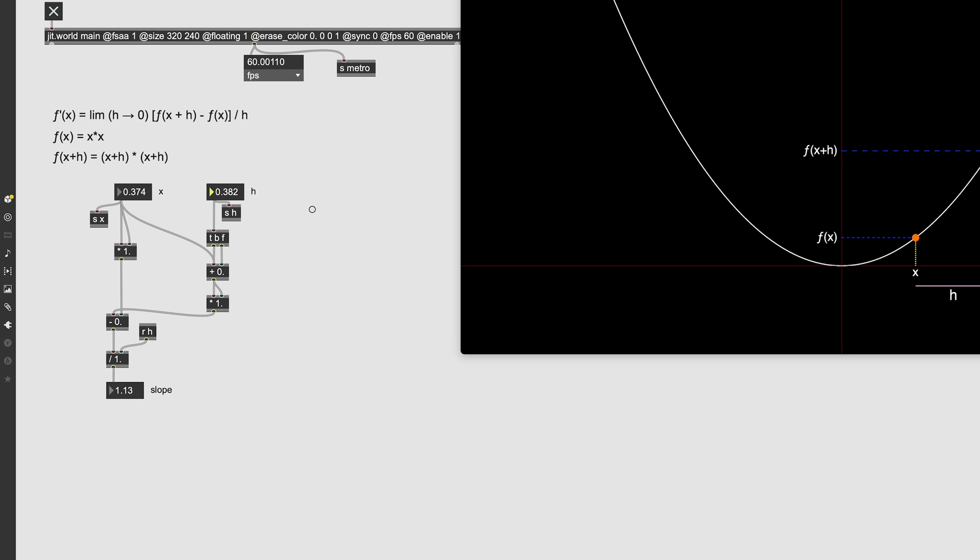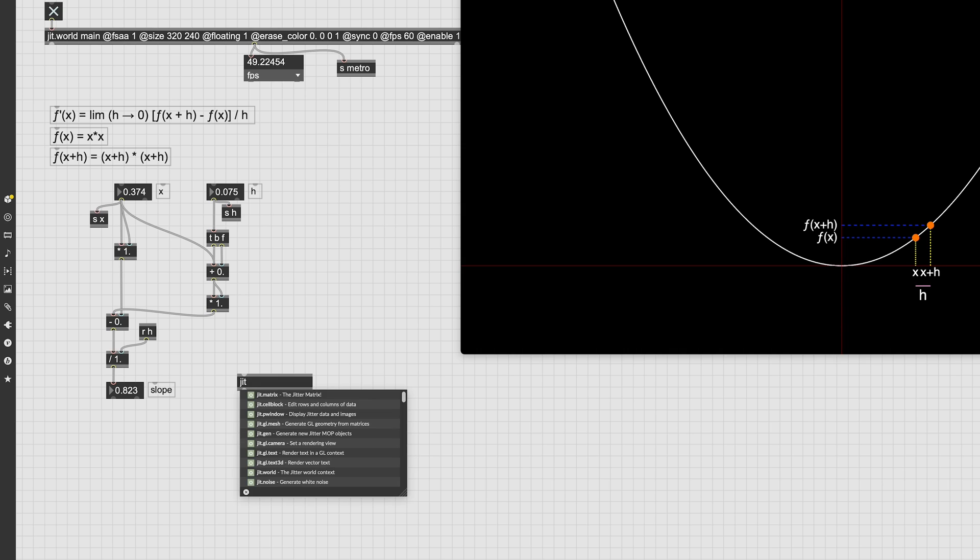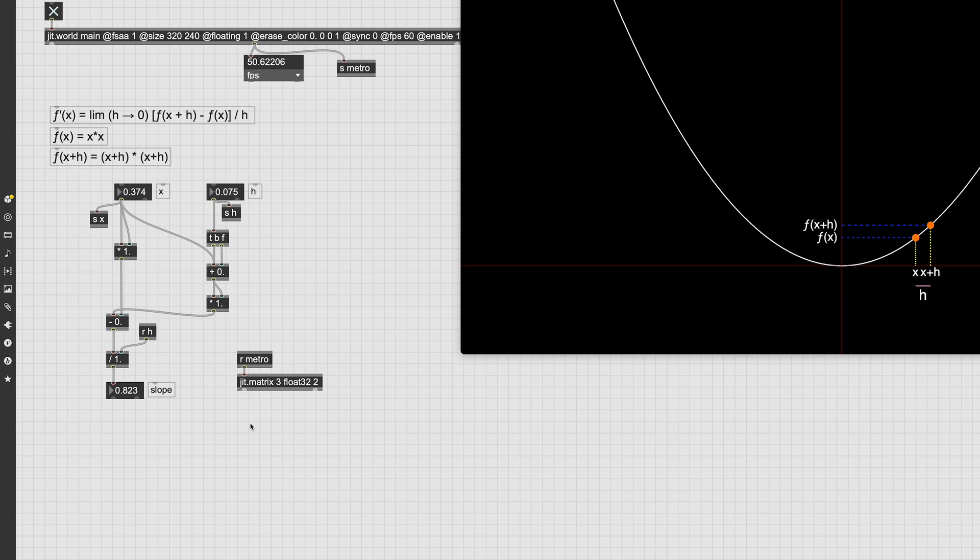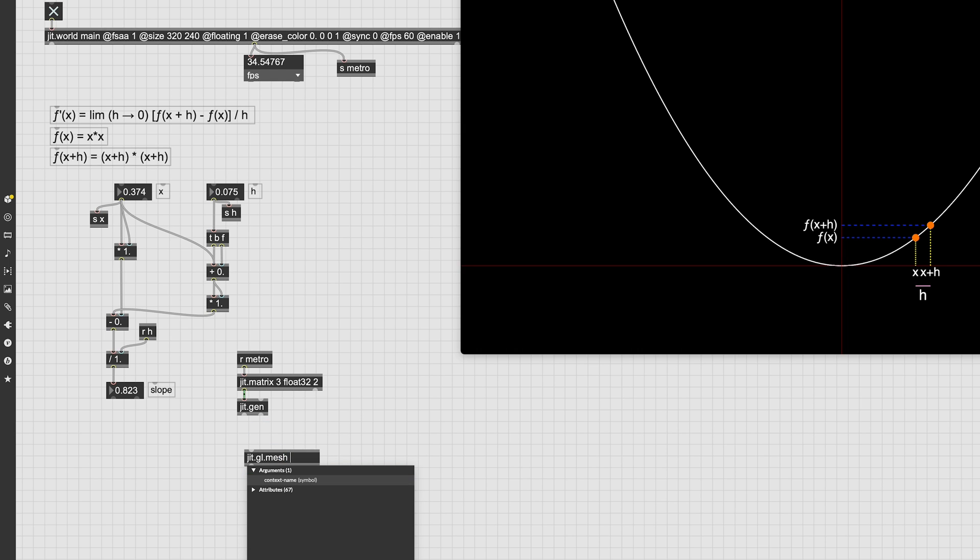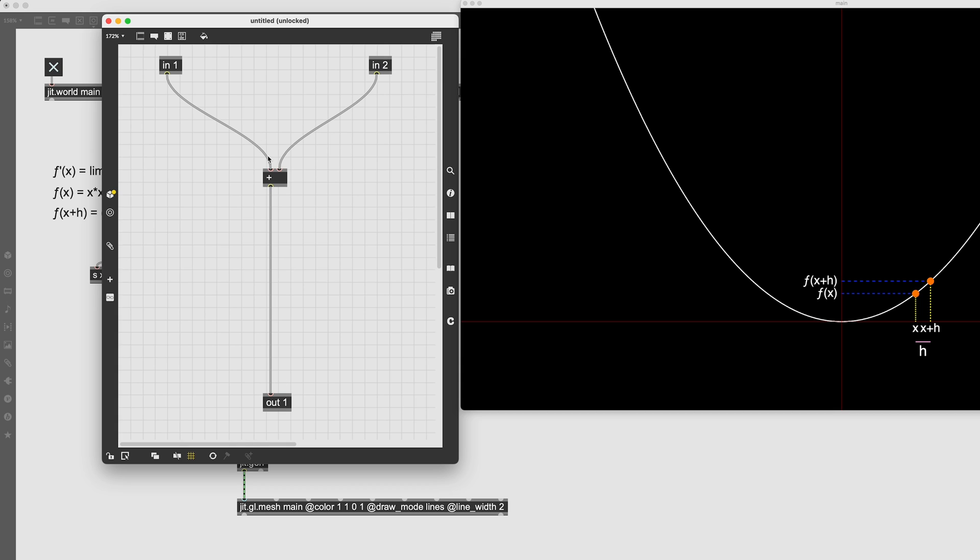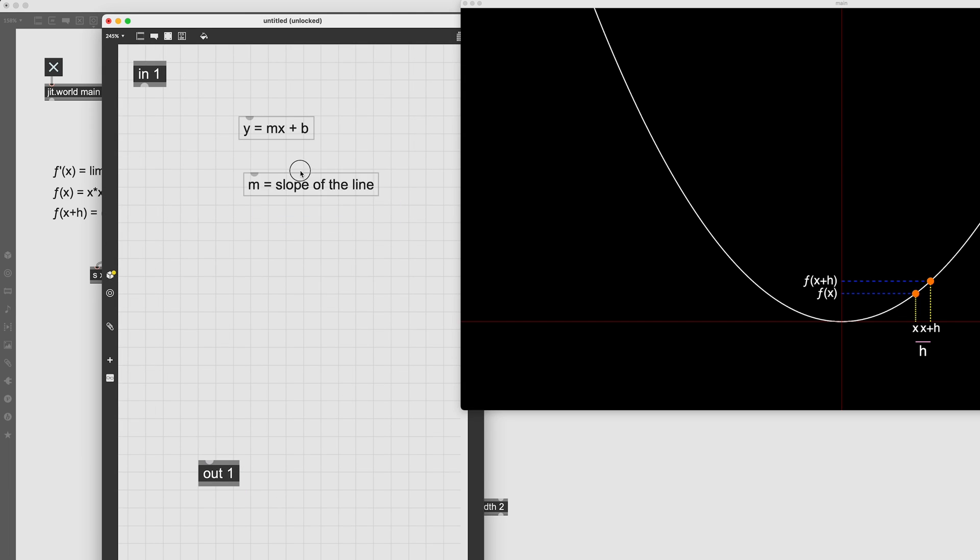Now to check if this worked, we can draw our line that intersects those two points, and will transform into the tangent as h approaches zero. So to draw that line, we can use a JITGen and GGLMesh. So let's create a JITMatrix with three-plane, float32, and only two cells, because we only need two points for a line. Let's create a JITGen, GGLMesh. Let's go inside JITGen. Now the equation for a line is this one. y is equal to m multiplied by x plus b. Now m will be the slope of the line.